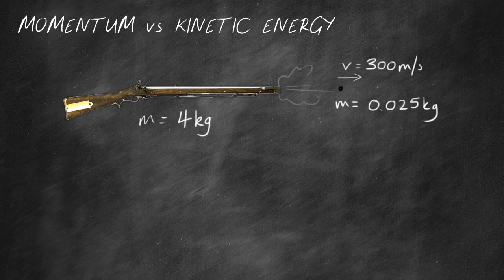I found out some data about it. I found out the mass of the rifle, the Baker rifle, was about 4 kilograms and the mass of the bullet that the rifle threw is about 0.025 kilograms and the muzzle velocity was 300 meters per second.